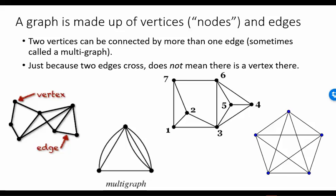A graph is made up of vertices and edges. The vertices are sometimes called nodes and they're indicated with a black dot or a circle. Two vertices can be connected by more than one edge — sometimes this is called a multi-graph.